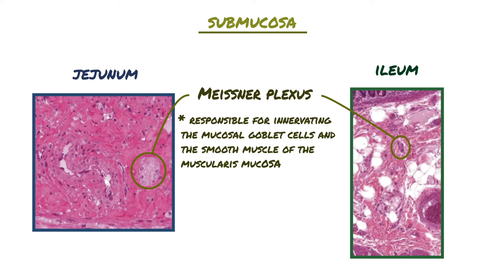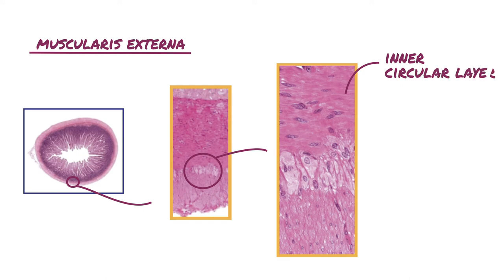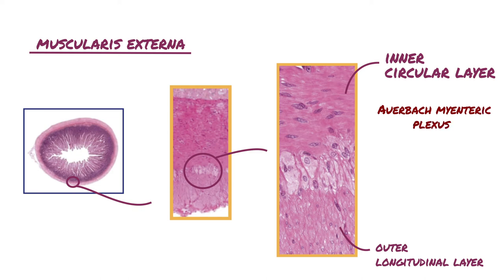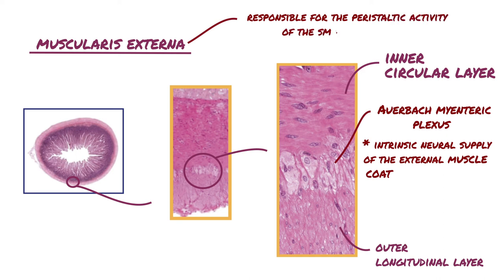All segments of the small intestine have a muscular layer surrounding the submucosa called the muscularis externa or muscularis propria. It is composed of an inner circular layer and an outer longitudinal smooth muscle layer. The Auerbach's myenteric plexus, located between the two muscle layers, is the intrinsic neural supply of the external muscle coat. The muscularis externa is responsible for the peristaltic activity of the small intestine.